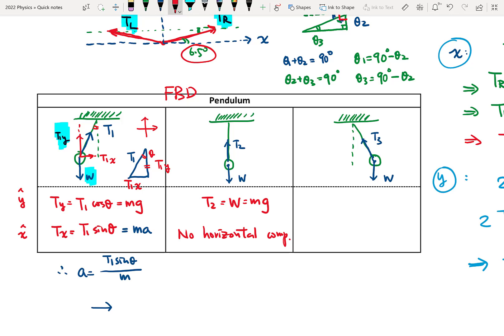And in situation 3, okay, so we can do the triangle here. And this is T3, T3X, T3Y. Okay, and in this situation, again, T3Y. Theta is here, so theta is here. T3Y equals T3 cosine theta, and that will balance W, that will balance M G, okay.